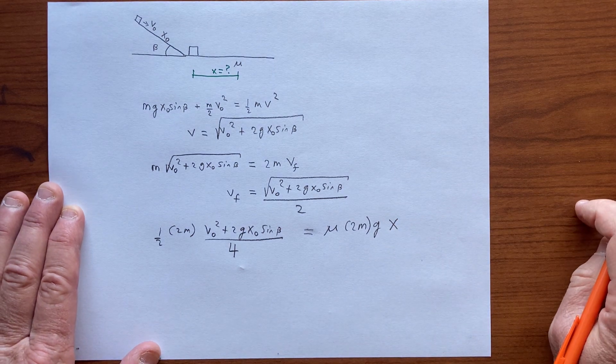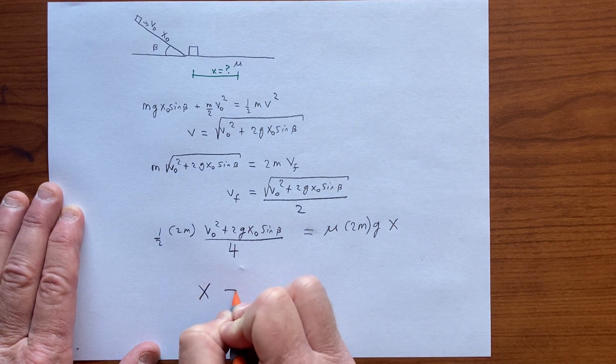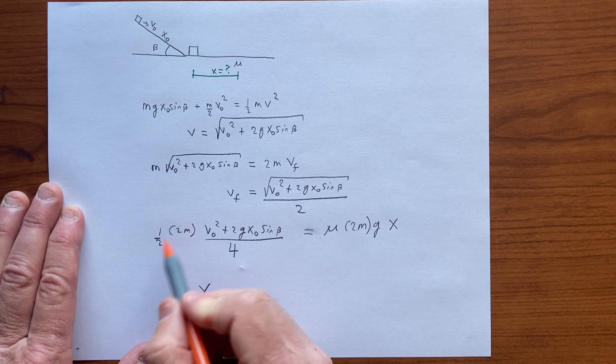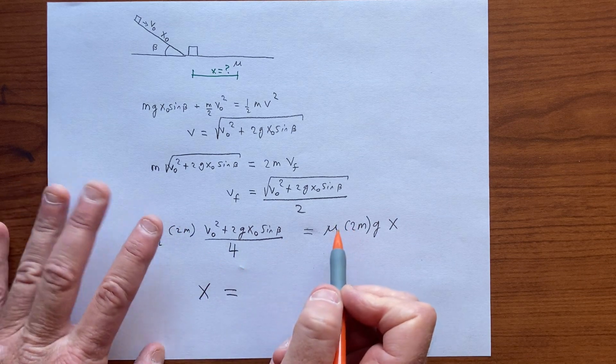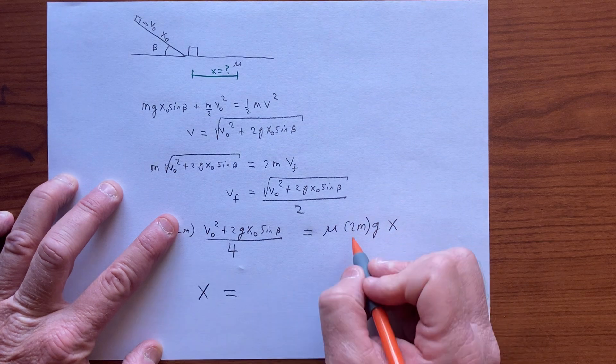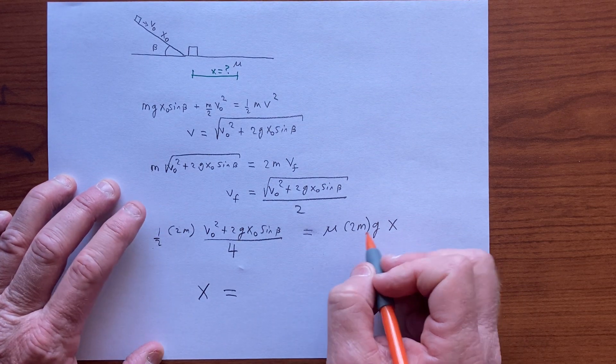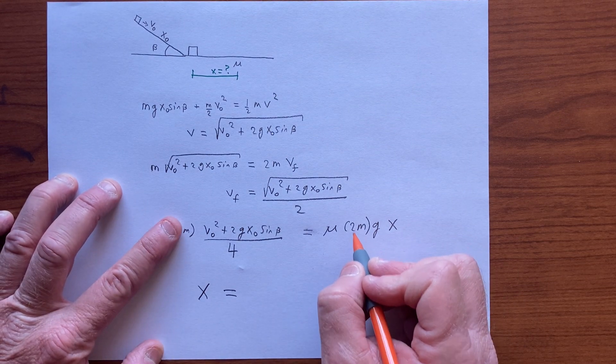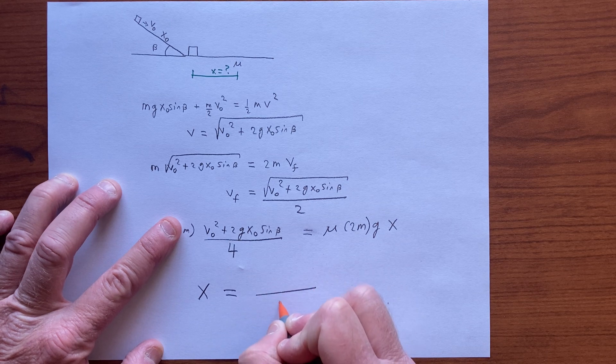So we can solve for x, and x ends up being, right, the 2s here cancel, we have a factor of 4 here, the mass will cancel, so this will disappear. Sorry, we still have that factor of 2 there, so this looks like it becomes an 8.